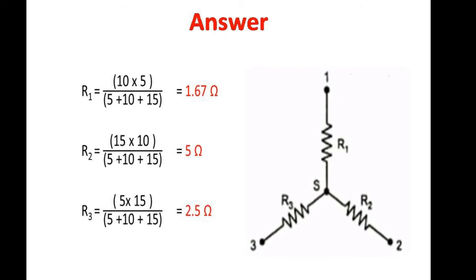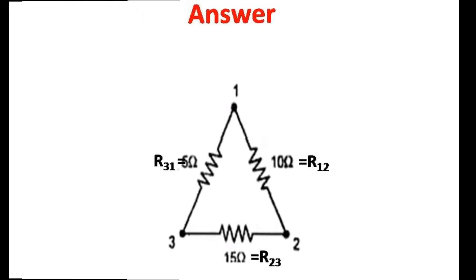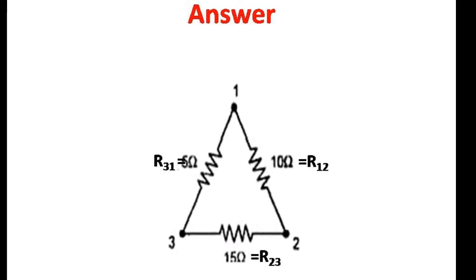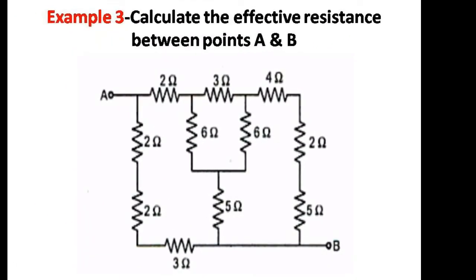In a similar manner we can find R2 and R3, and substitute those values in the star network to get the result as a star connection. We shall see the next example: convert the given star connection into a delta connection. Using the formula already explained and supplying those values, we get the values for the delta connection.